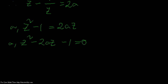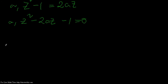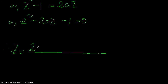From here, using Sridharacharya's formula we can find z. The equation is z squared minus 2az minus 1, so z equals 2a plus or minus root over — looking at this function, z squared minus 2az minus 1.